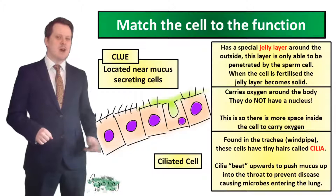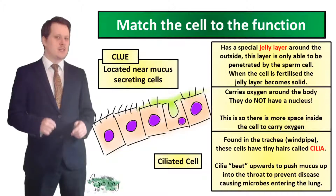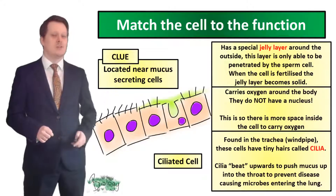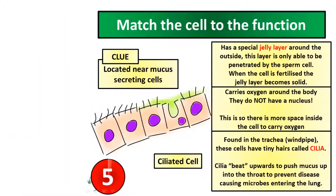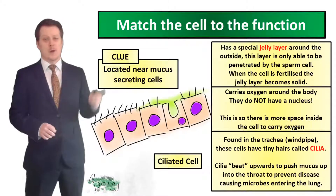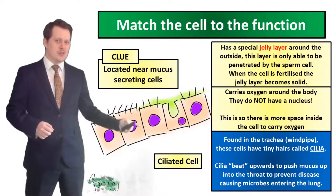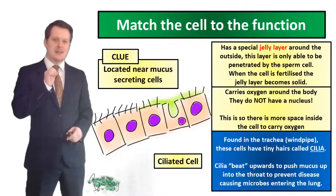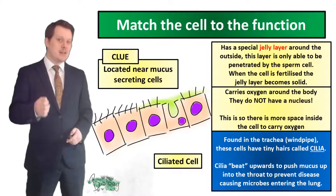Our second specialized cell is the ciliated cell. Our clue is that it is located near mucus-secreting cells. We've got a big clue in the name itself. This cell is found in the trachea or windpipe, and these cells have tiny hairs called cilia. These cilia beat upwards to push mucus into the throat, preventing disease-causing microbes from entering the lungs.